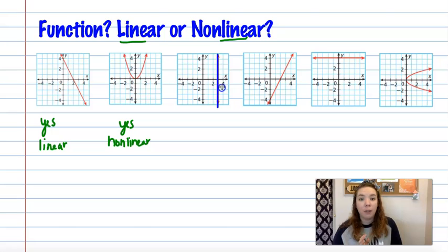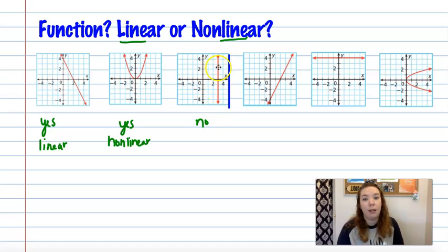On this third one, if I put my blue line on top of that red line, it's crossing at every single point, it's crossing an infinite number of times. So it is not a function. And if it's not a function, we don't even care if it's linear or nonlinear. But this is the only line that is not a function, vertical lines.